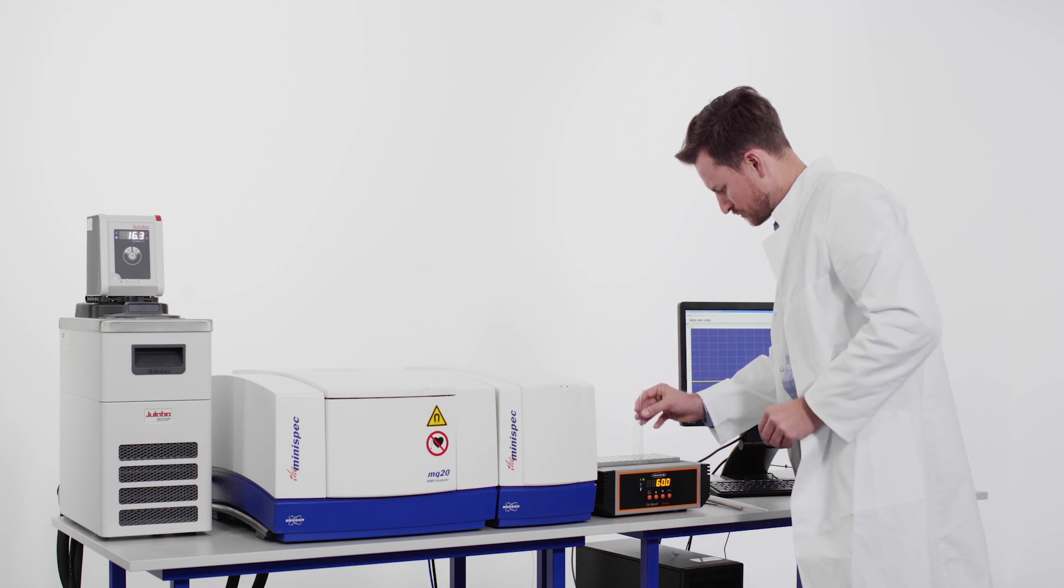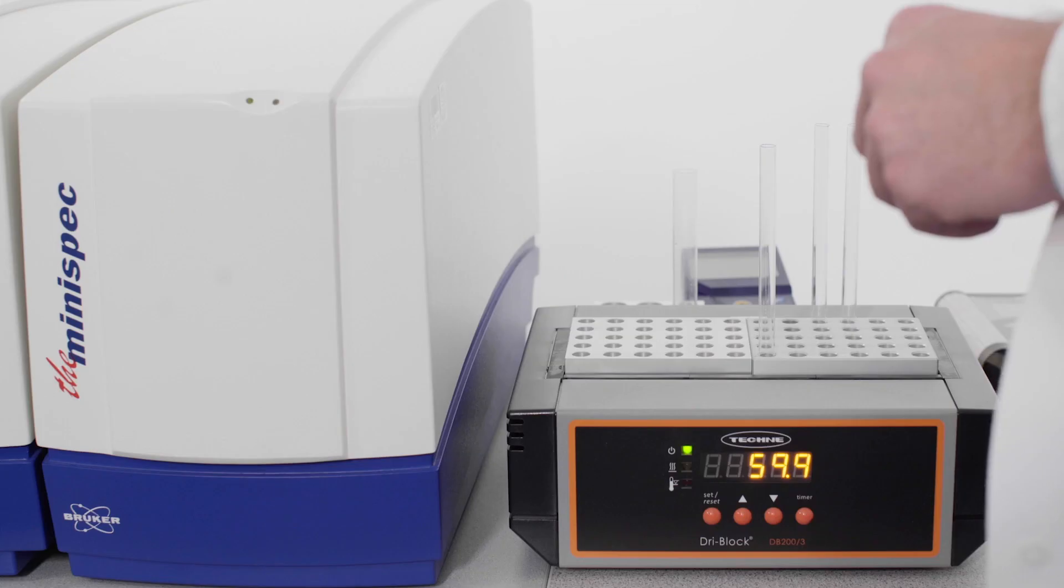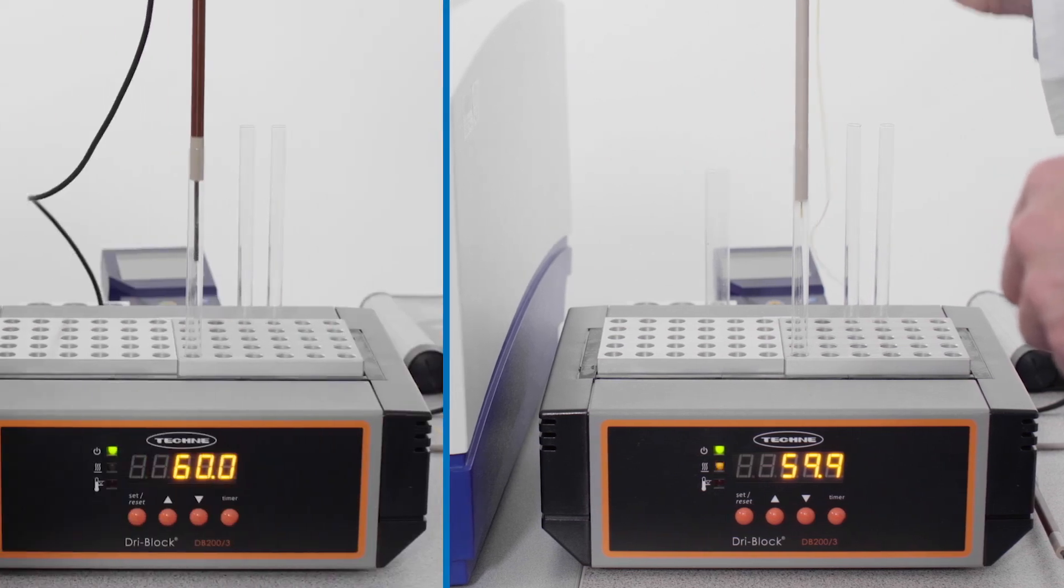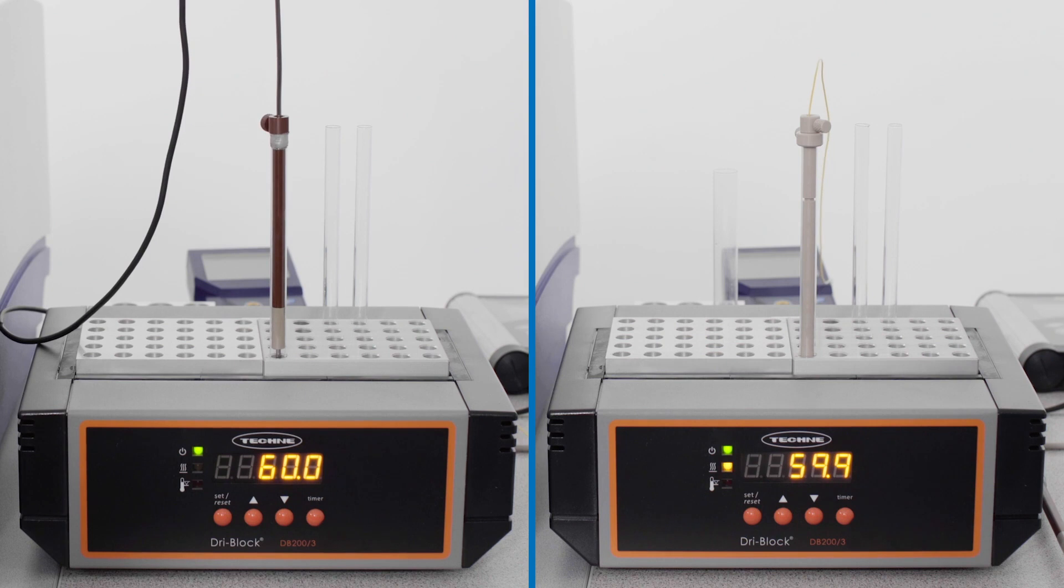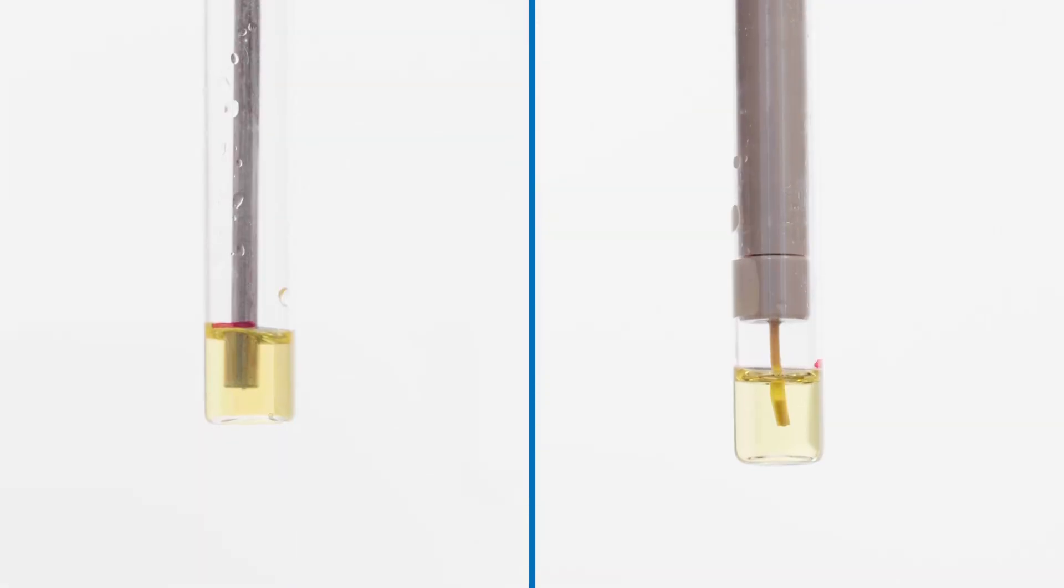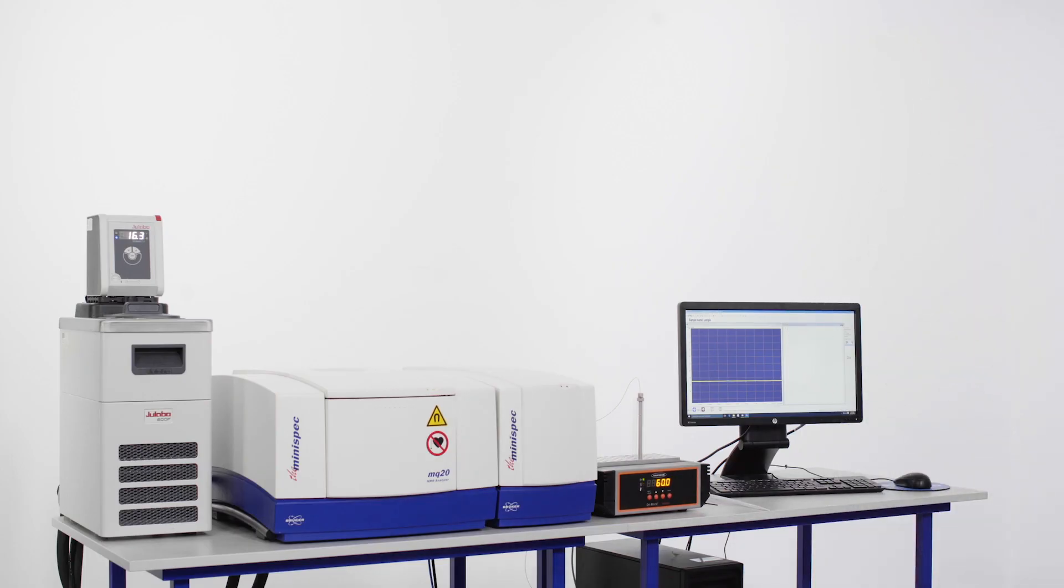The sample is simply filled in a standard 10 mm NMR glass tube that is later inserted in the TDNMR device after pre-tempering. The measurements require no sample preparation and are reagents free, making the method truly non-invasive and compliant for the food sector.